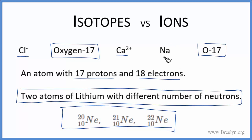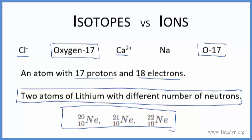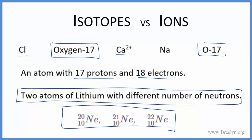For Na up here — sodium — there's no charge, so it's not an ion. It's going to be neutral. We really don't have a lot more information, so let's just leave that as a neutral atom. A question we should be asking ourselves right now is: can an isotope also be an ion?